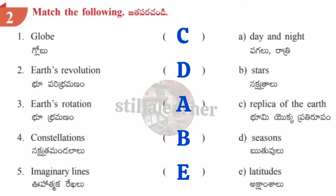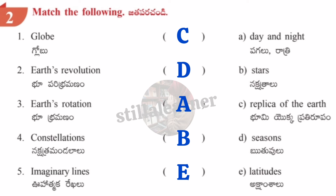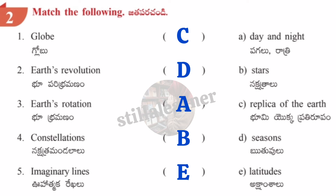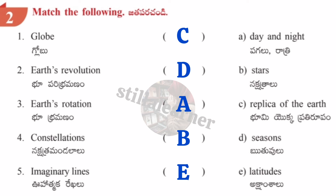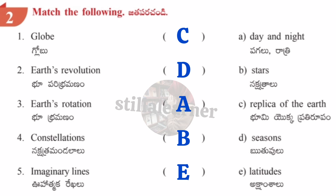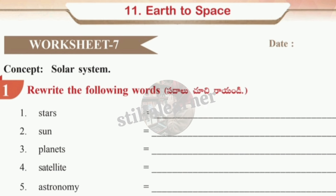Match the following in Worksheet 6: Globe → C (replica of the earth). Earth's revolution → D (seasons). Earth's rotation → A (day and night). Constellations → B (stars). Imaginary lines → E (latitudes). Answers: C, D, A, B, E.